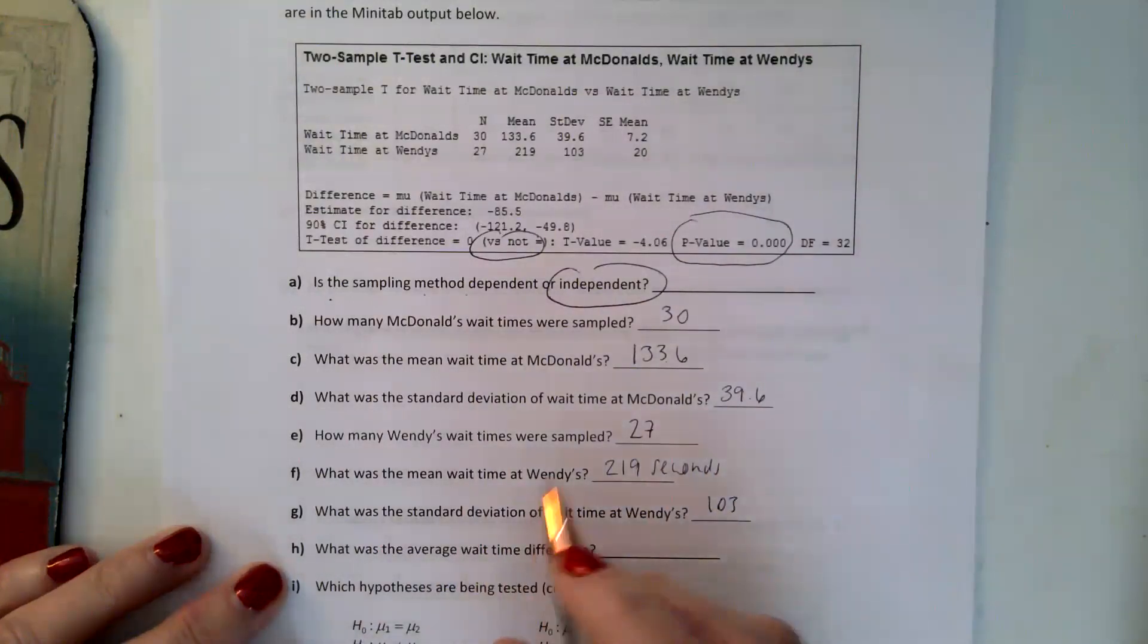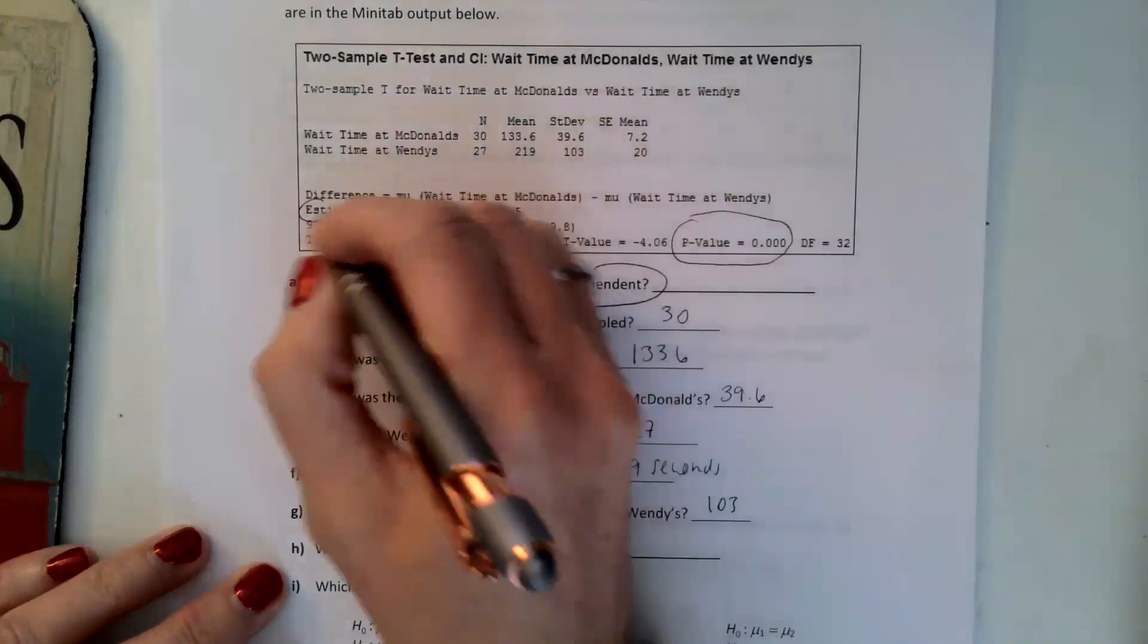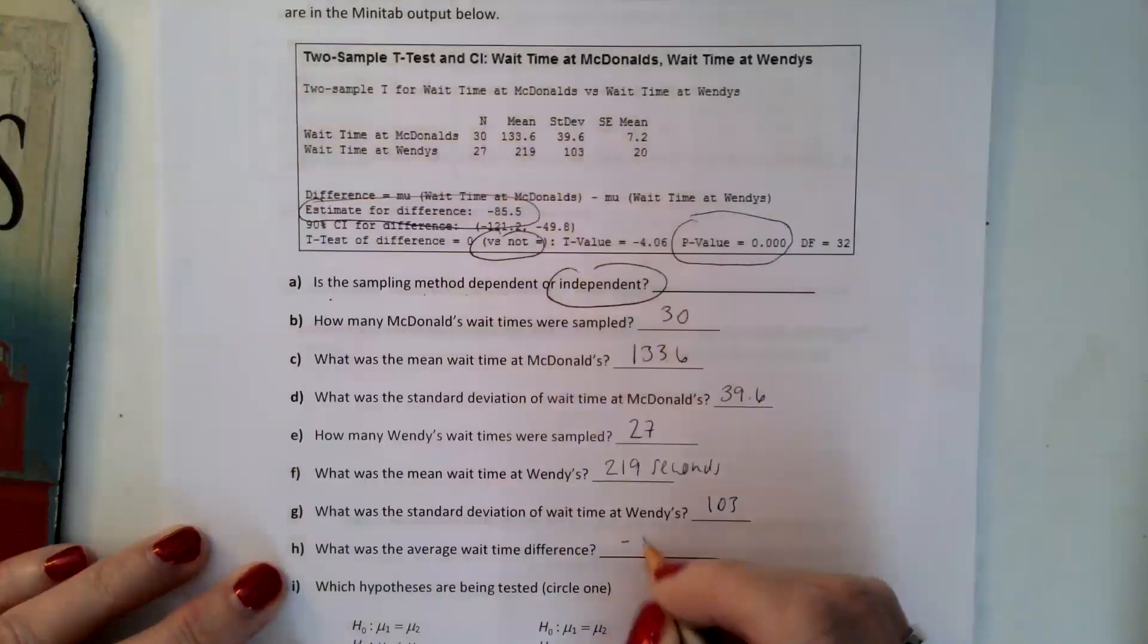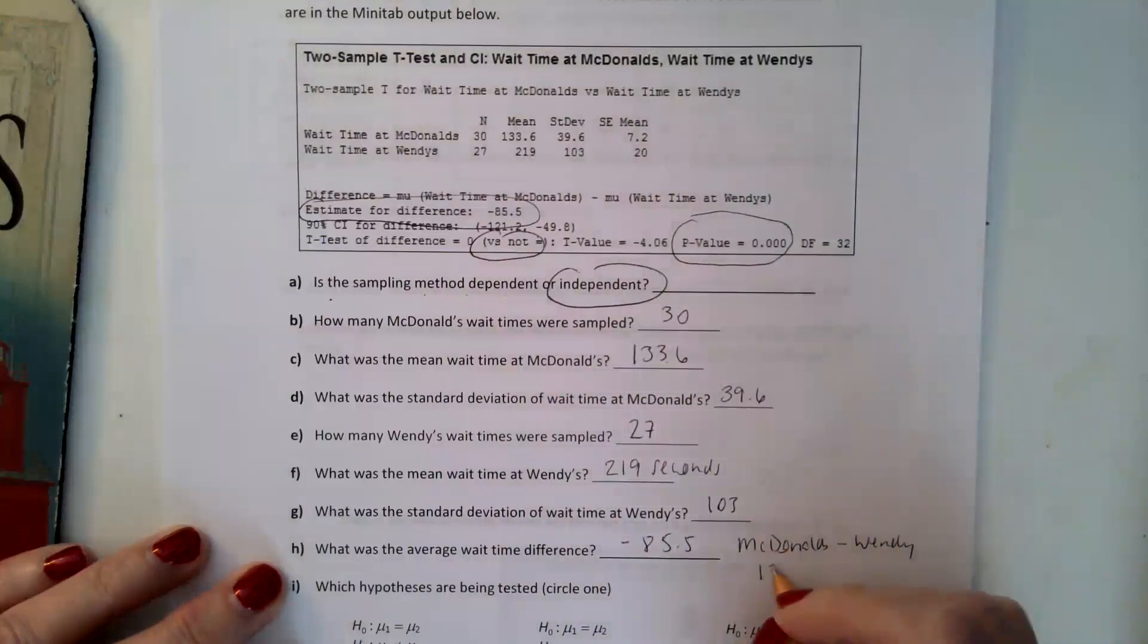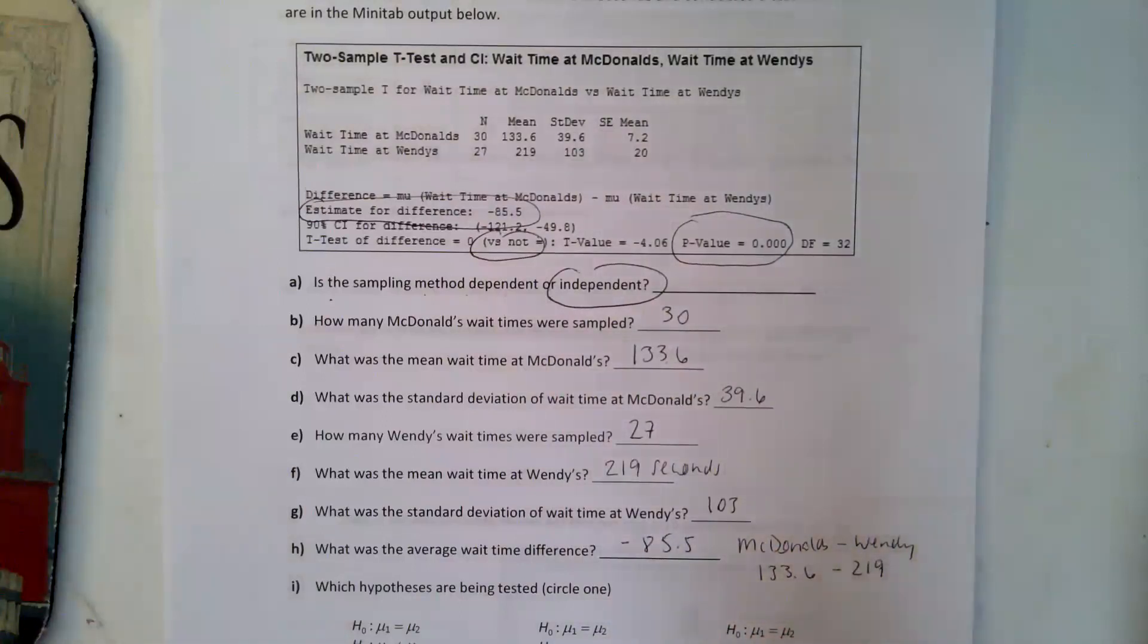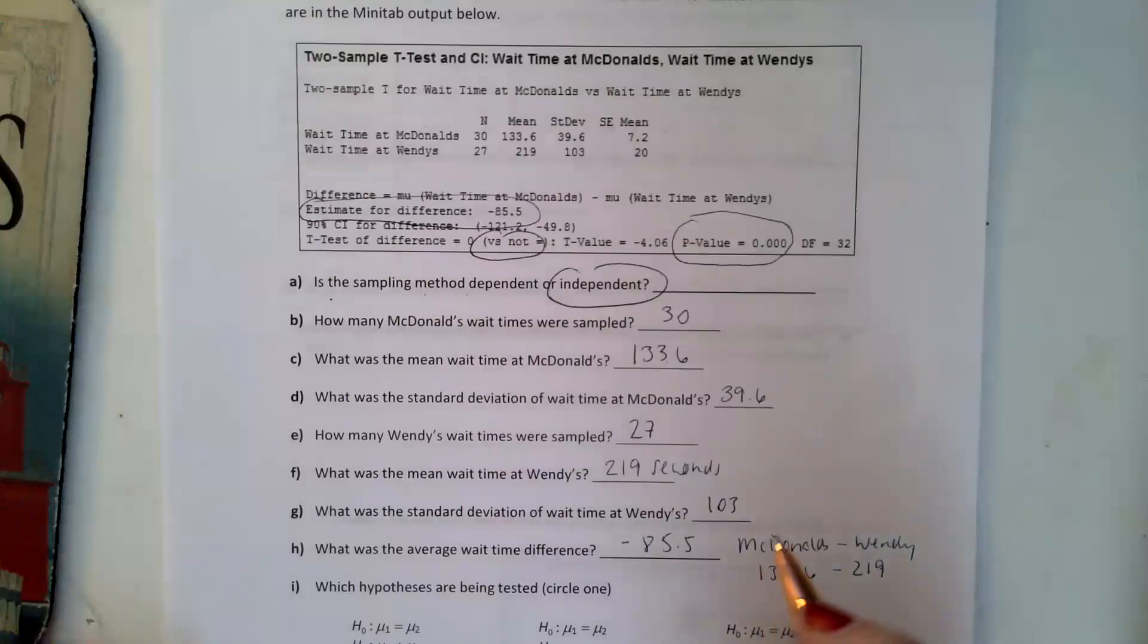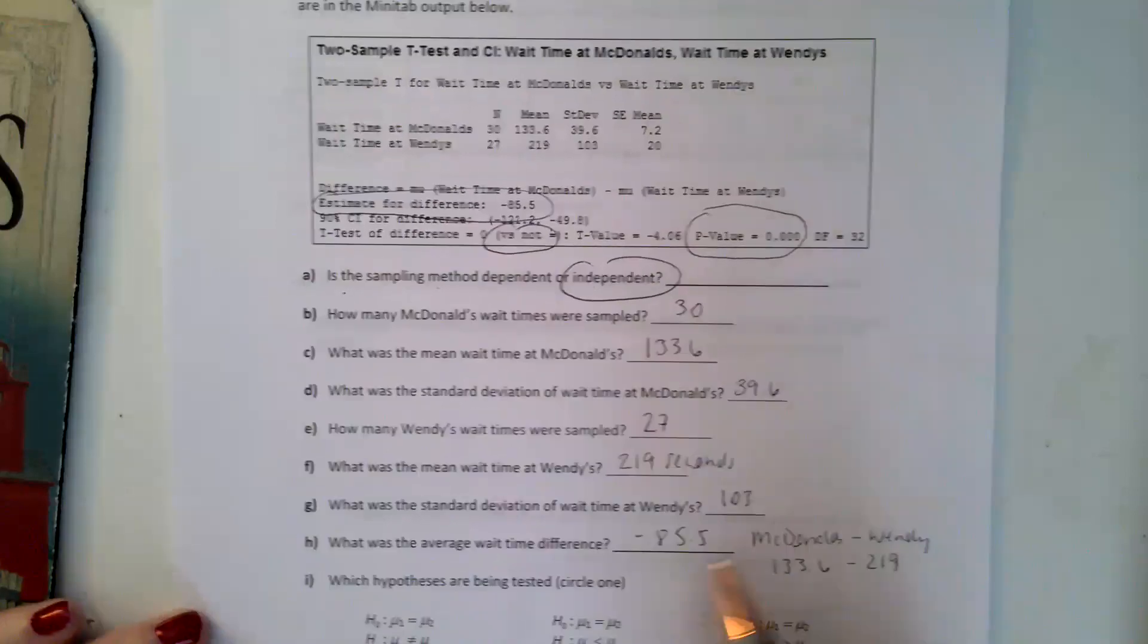What was the average wait time difference? And that's right here, the estimated difference, so negative 85.5. So that means they must have taken McDonald's and subtracted Wendy's. So 133.6 subtracting 219, 133.6, and rounded.